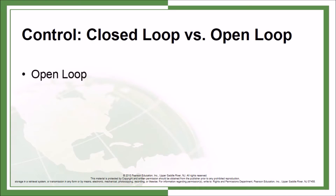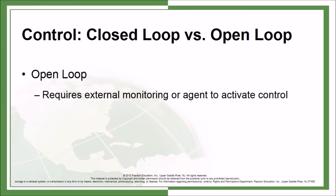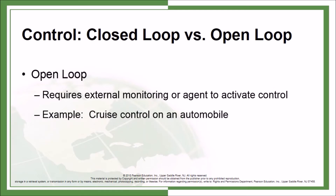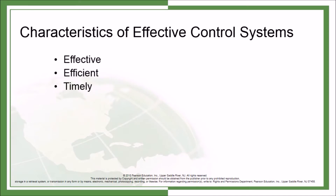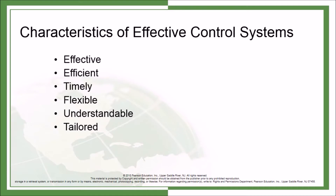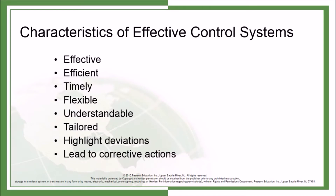Open loop requires external monitoring or an agent to activate control. Example: cruise control on an automobile. Following are the characteristics of effective control systems: effective, efficient, timely, flexible, understandable, tailored, highlight deviations, and lead to corrective actions.